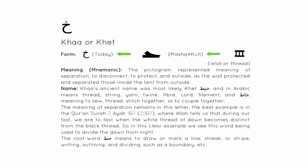In summary — Khat form: The original pictogram of the letter was of a wall or fence and possibly also of a thread. The pictogram represented meaning of separation, to disconnect, to protect, and outside, as the wall protected and separated those inside the tent from the outside. Khat's ancient name was most likely Khat, and in Arabic means thread.